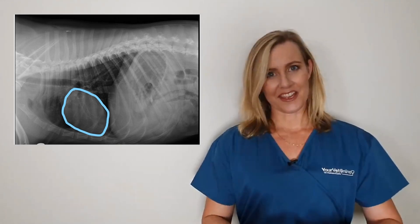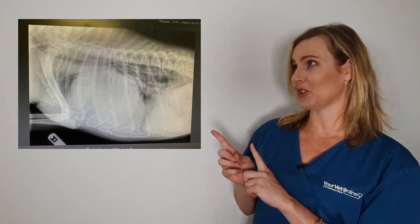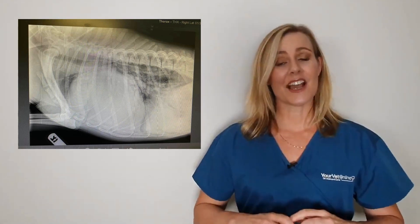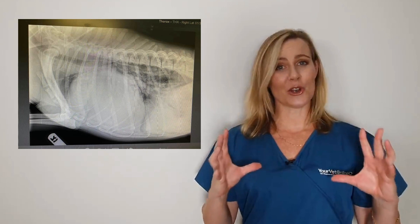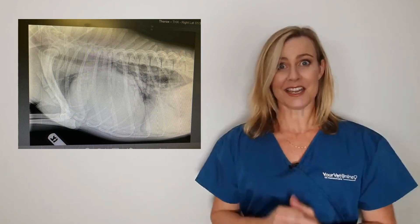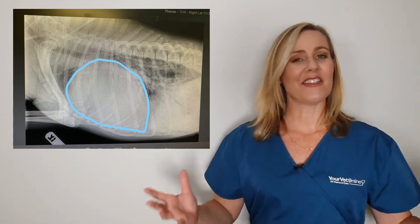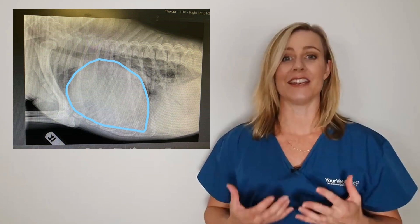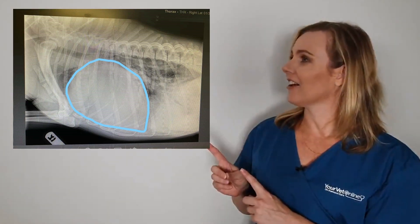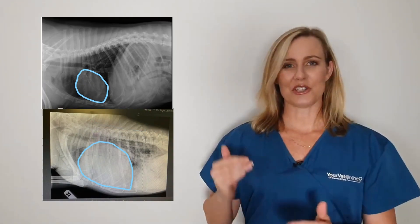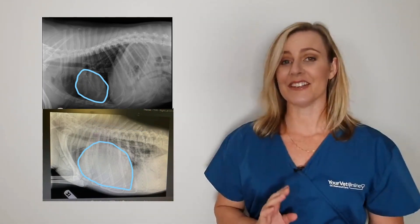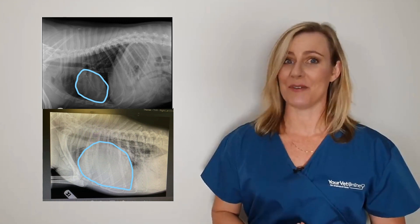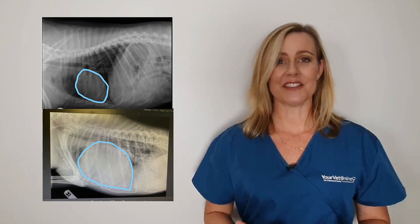Okay, then we get to the abnormal chest x-ray of a dog. Now what we can see in this one, showing right here, is that there is a rather large globular heart in the middle of that x-ray. Now I've got the two side by side, and we can see that there are some really big differences that can be seen with these two x-rays.